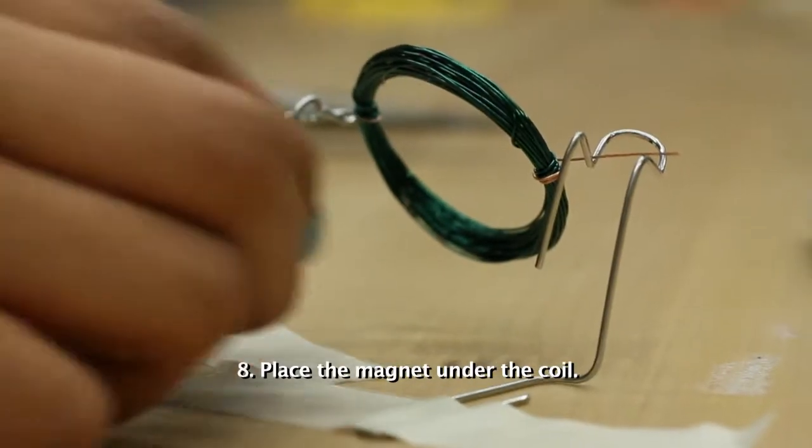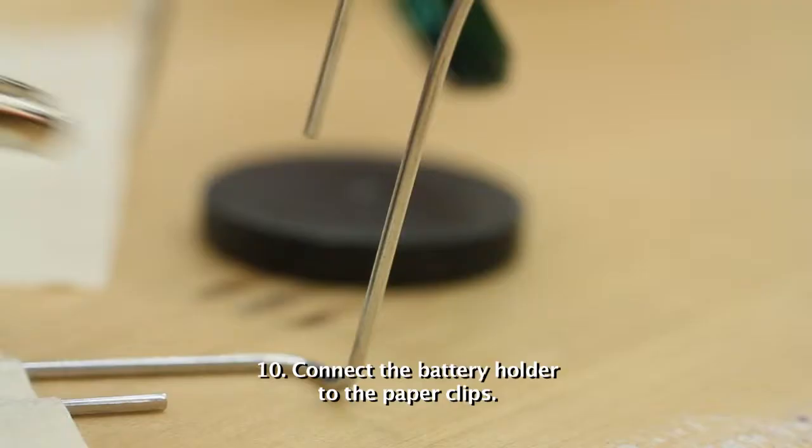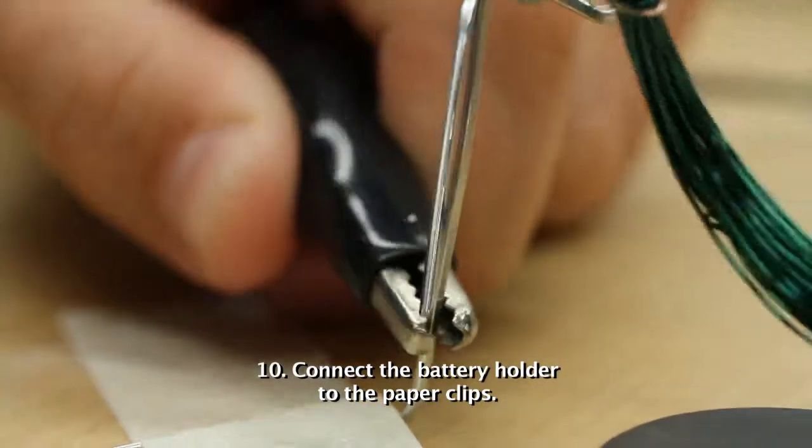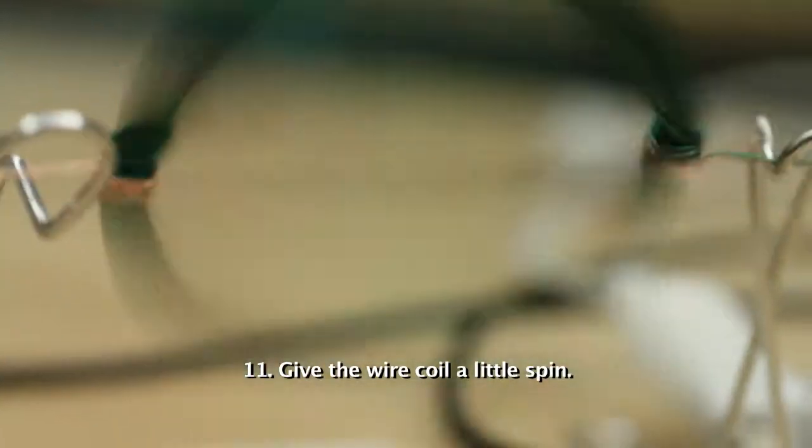Place the ceramic magnet just under the coils. Put the two AA batteries into the holder. Use the alligator clips to connect the wires from the battery holder to the paper clips. Finally, give the wire coil a little spin.